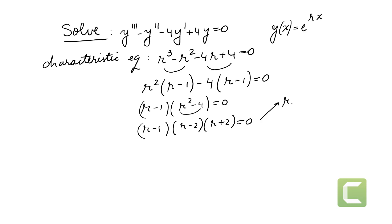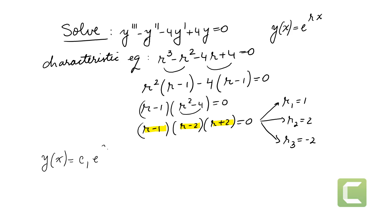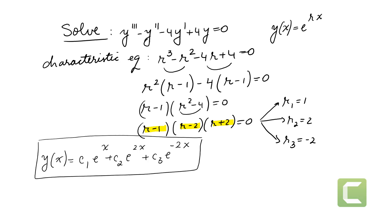We also apply the difference of squares — a² minus b² — to factor r² minus 4, giving r minus 1 times r minus 2 times r plus 2 equals zero. So we end up with three roots: r1 equals 1, r2 equals 2, and r3 equals negative 2. This means the general solution is y of x equals c1·e^x plus c2·e^(2x) plus c3·e^(-2x).